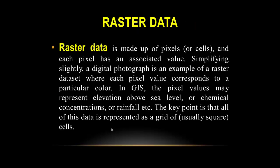Raster data is made up of pixels or cells, and each pixel has an associated value. A digital photograph is an example of a raster data set, where each pixel value corresponds to a particular color. In GIS, the pixel value may represent elevation above sea level, chemical concentration, or rainfall. All of this data is represented as a grid of usually square cells.